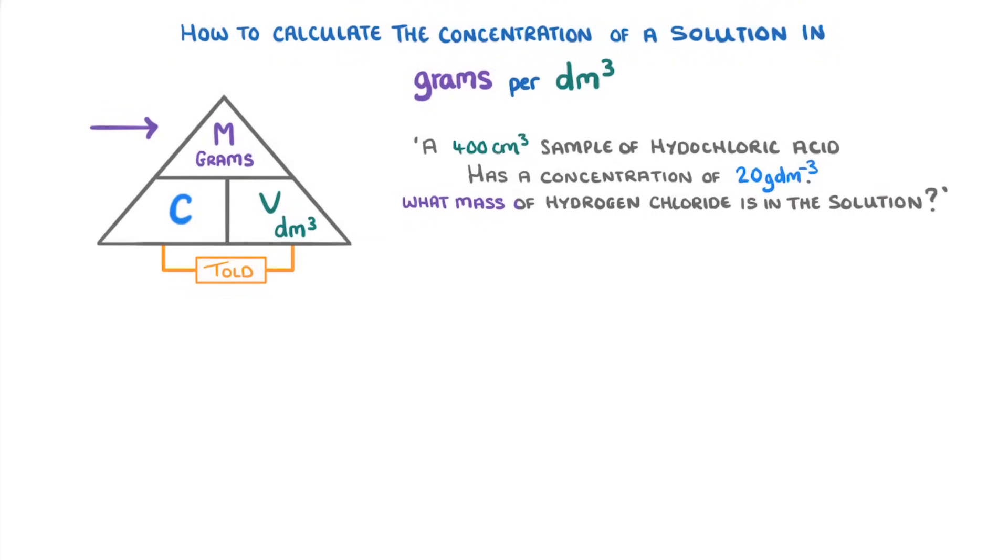If we look at our formula triangle, we can see that mass, which is on the top, must be concentration times volume. So we just turn our 400 centimetres cubed into decimetres cubed by dividing it by 1000, and multiply this 0.4 decimetres cubed by 20 to give us a mass of 8 grams. So there must have been 8 grams in our original sample of 400 centimetres cubed.